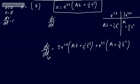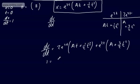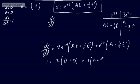Setting dx/dt = 1 and substituting t = 0: 1 = 2·1·(0 + 0) + 1·(a + 0), so a = 1.